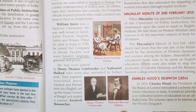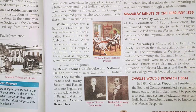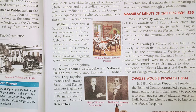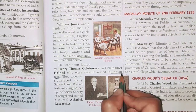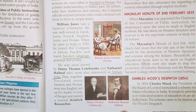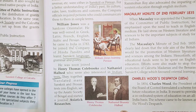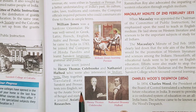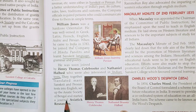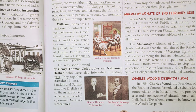William Jones was soon joined by Henry Thomas Colebrook and Nathaniel Halhead, who were also interested in Indian texts and wanted to study the original historical texts of India. Together they translated works from Sanskrit into English, set up the Asiatic Society of Bengal, and started a journal called Asiatic Researches. They were actively promoting and studying Sanskrit language.